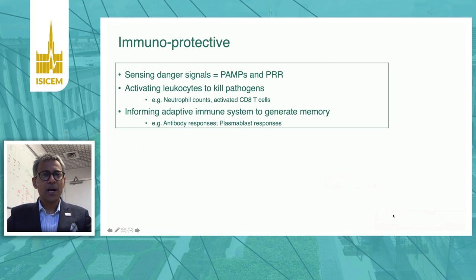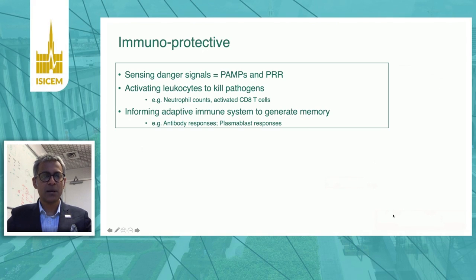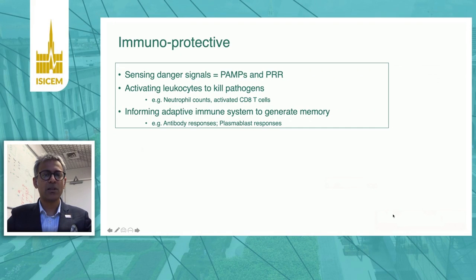What do we mean by immunoprotective responses? Immunoprotective responses are things that help the body survive infection. For example, pathogens need to be sensed, and those danger signals are sensed by pathogen-associated molecular patterns. An activated leukocyte will kill the pathogen — for example, an activated T cell would kill a virus. Immune cells also need to inform the adaptive immune system to generate long-term memory to prevent secondary infection.